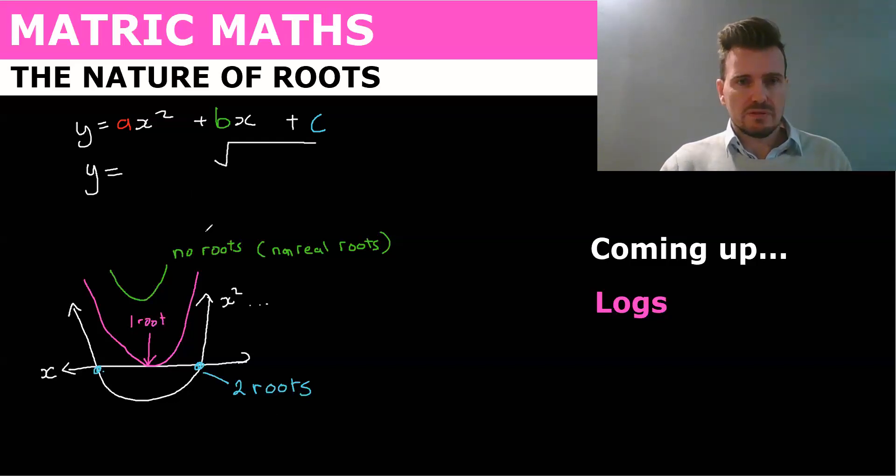And specifically the part of the quadratic equation that comes underneath or inside the square root. So if I have, this is negative b.